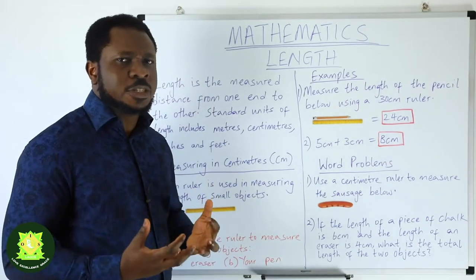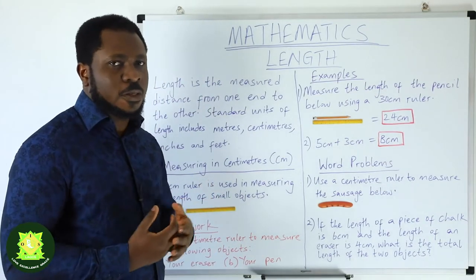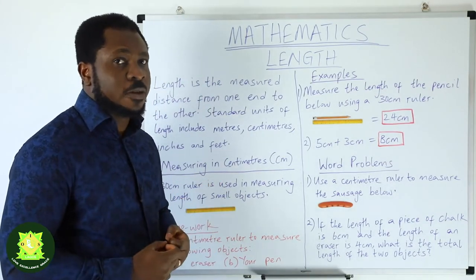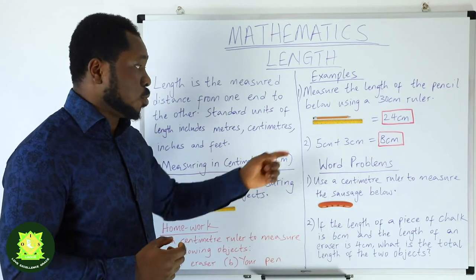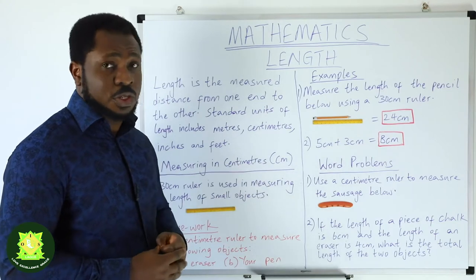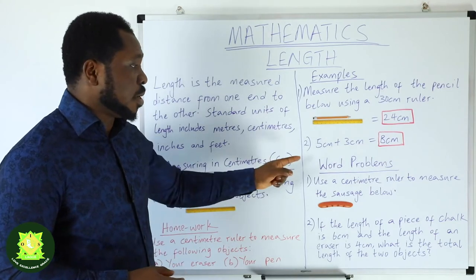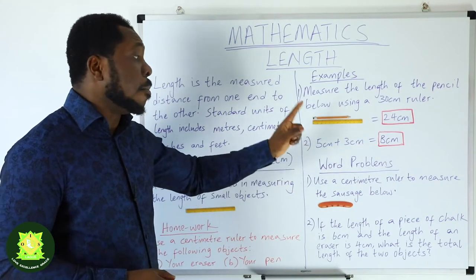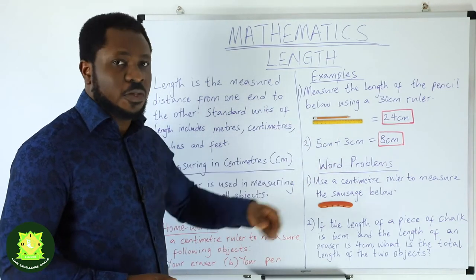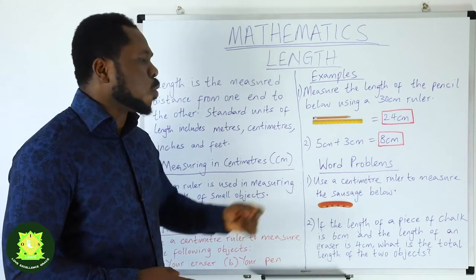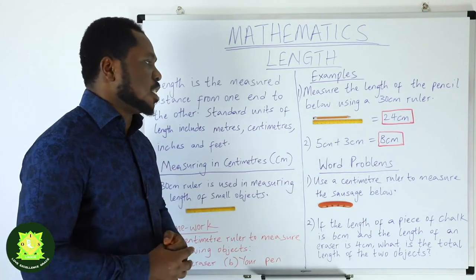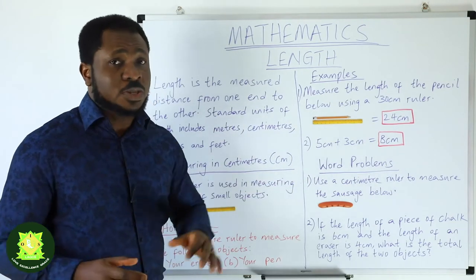Sometimes you may need to add the length of two or more things together. Example number two says: 5 centimeters plus 3 centimeters. What is 5 centimeters plus 3 centimeters? Let's do that together.